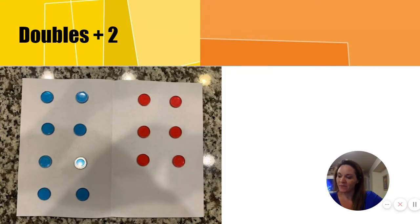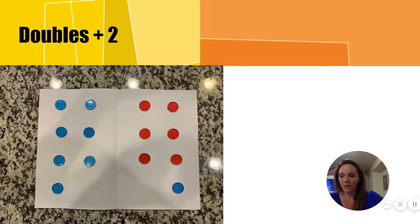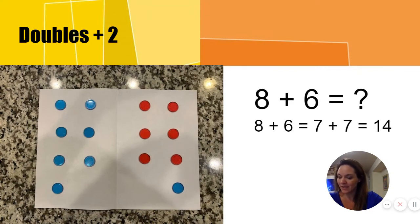What about an example like this? Here we see eight plus six. What is eight plus six? We can move one blue counter from the eight to the pile of six red counters. Now we see another dot image. We see double seven. Eight and six is the same as double seven or fourteen. Will this happen every time?